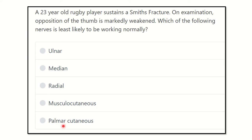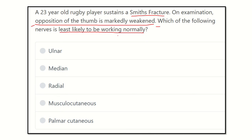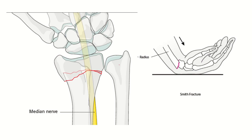The key points here are Smith fracture and that opposition of the thumb is markedly weakened. That means the muscle responsible for thumb opposition is injured, or its supplying nerve is injured — hence the thumb opposition power is reduced. So whose nerve is least likely to be working normally? That means whose nerve got injured?